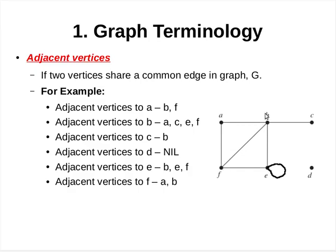Whereas in the case of vertex B, the adjacent vertices are A, C, E, and F. The same concept is used to identify the adjacent vertices for the remaining vertices.